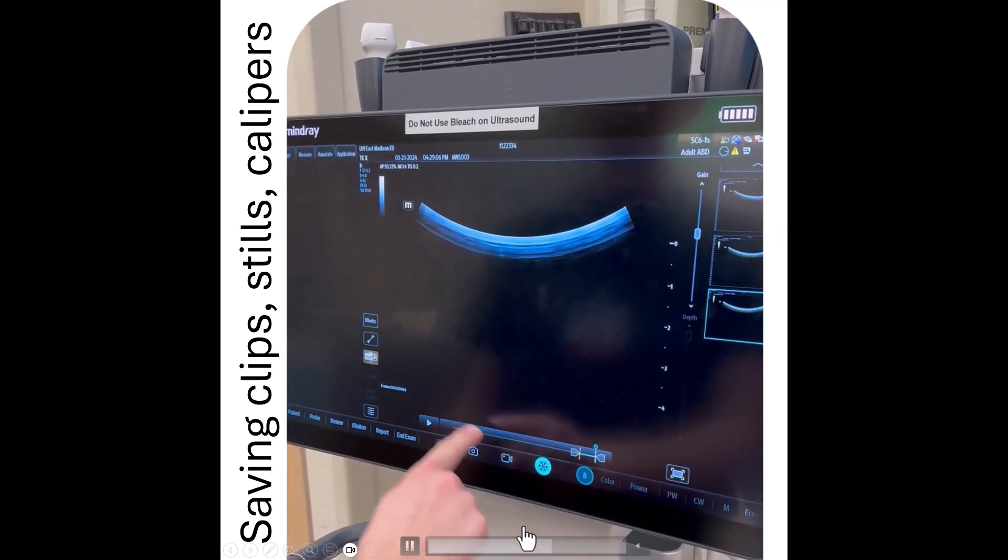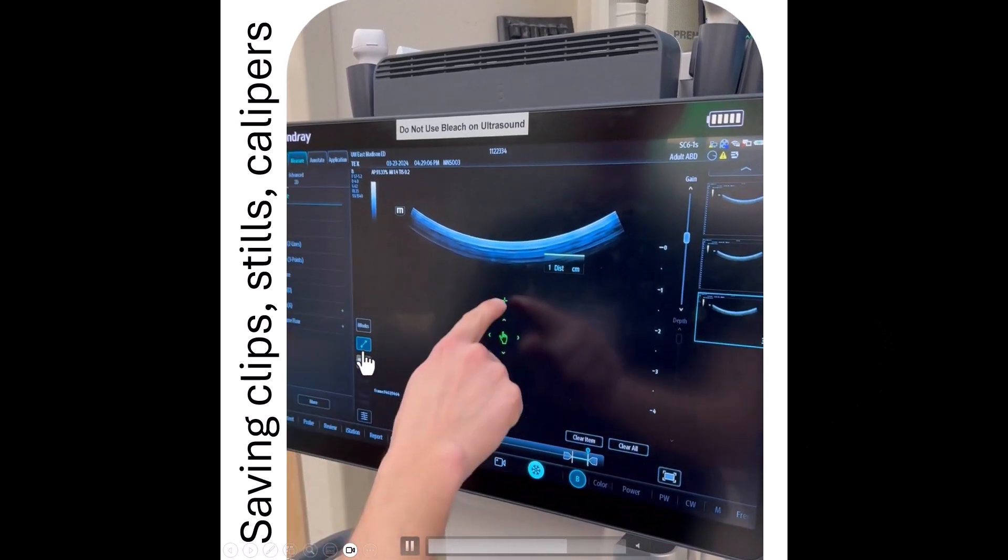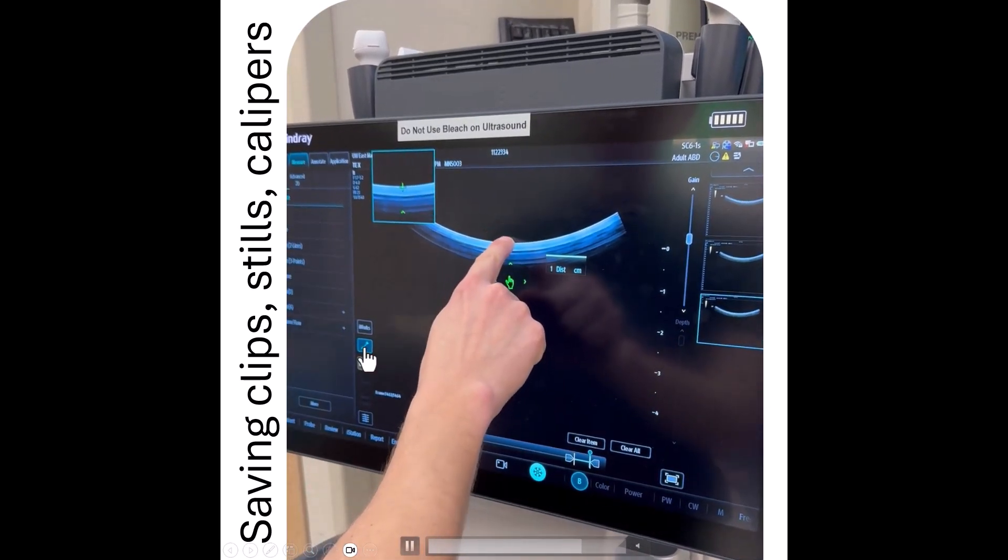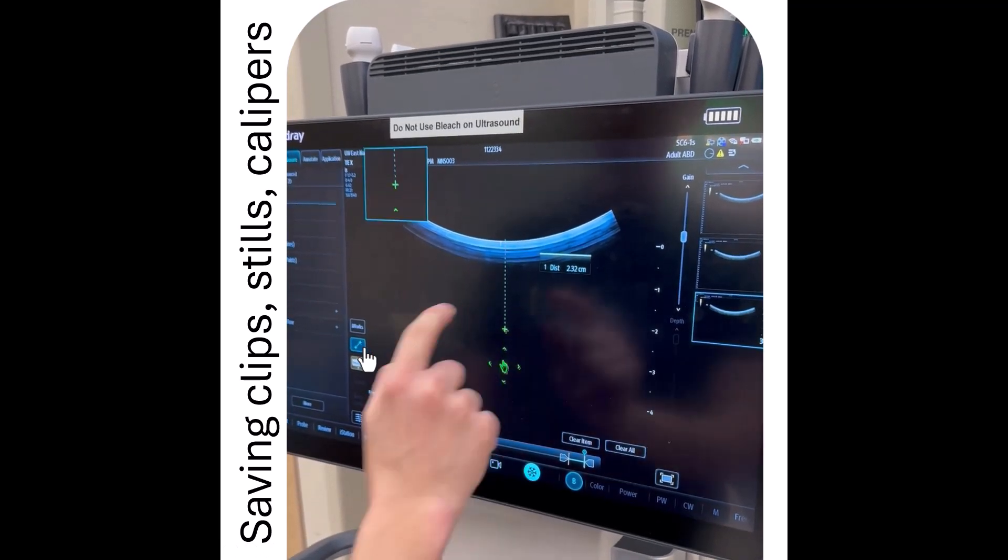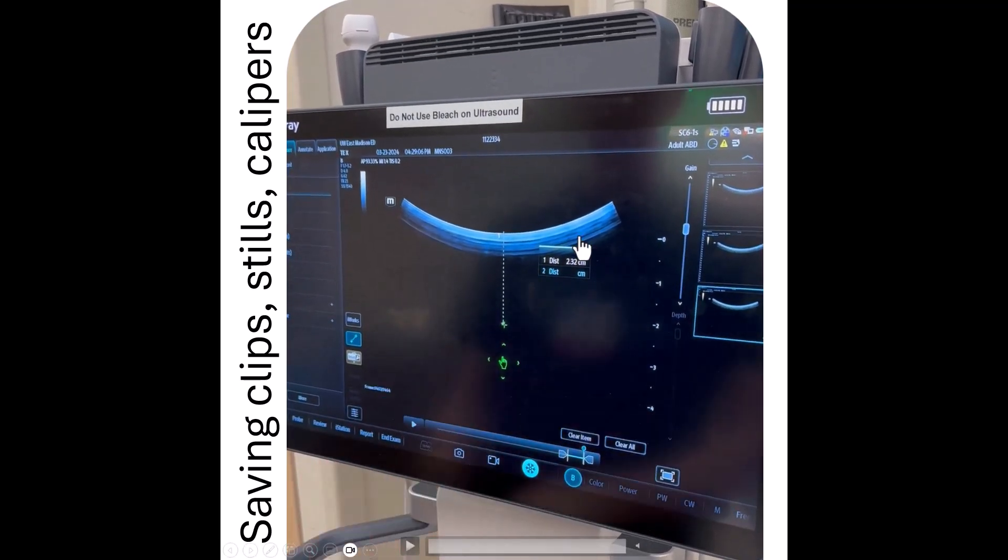To freeze, click the snowflake. And if you wanted to take a measurement, your caliper buttons are here. You'll drag and drop. You'll click where you want the first caliper to go, and then you'll click once you want the second caliper to go, and you'll see your measurement here.